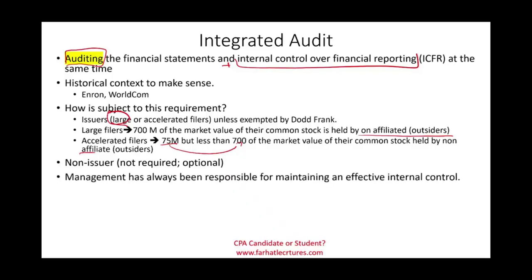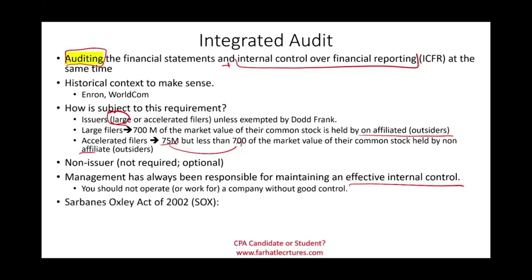Management always was responsible for maintaining effective internal control — you cannot run a company without it because we're talking about internal control over financial reporting. However, Sarbanes-Oxley of 2002 — named after senators Paul Sarbanes and Michael Oxley, enacted after Enron and WorldCom — increased management responsibilities. Now management is responsible to do more about internal control.